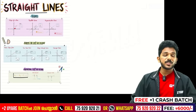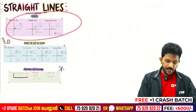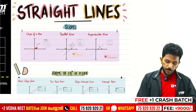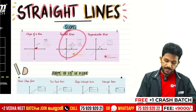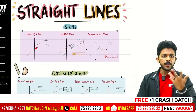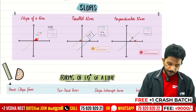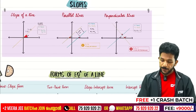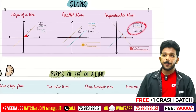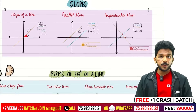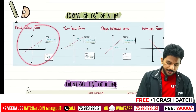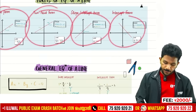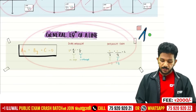Straight lines are very simple. I have a formula sheet for this: slope of a line, parallel lines, perpendicular lines. We have two formulas — m equals tan theta. Parallel lines have the same slope. Perpendicular lines: m1 times m2 equals minus 1. Point-slope formula, slope-intercept form, and the general equation of a line.